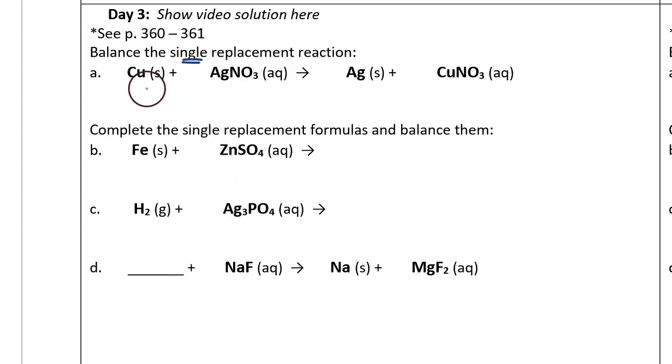And notice what happens. The single element switches. It used to be solid copper, but on the product side, it is now created solid silver. And the copper has turned into an ion and bonded with the nitrate. So we want to balance this by putting in coefficients. There's one copper here, and over on this side also one copper. There's one silver here, and on this side also one silver. And there's one nitrate here, and on this side there's also one nitrate. So everything's already balanced. We don't need to put in any different coefficients.